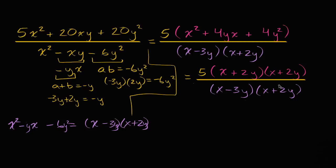And so now I have a common factor, x plus two y, in both the numerator and the denominator. So I can cancel x plus two y divided by x plus two y, well that's just going to be one, if we assume that x plus two y does not equal zero.